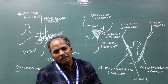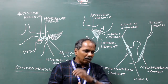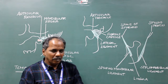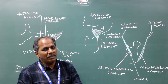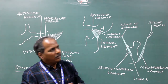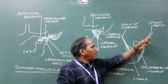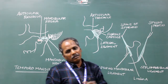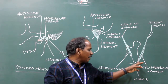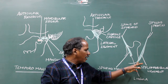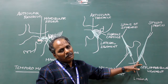Stylomandibular ligament. It is the thickened portion of the investing layer of deep cervical fascia. Proximally, it is attached to the styloid process of the temporal bone. Distally, it is attached to the angle of the mandible.